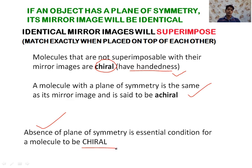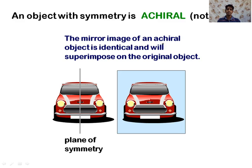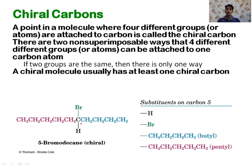A simple example of a chiral object is our hand. Our hand has handedness — both sides are not equal, it doesn't have any plane of symmetry, and it does not superimpose on its mirror image; hence our hand is a chiral object. In contrast, a car has a plane of symmetry, so its mirror image will superimpose on it, making it an achiral object.